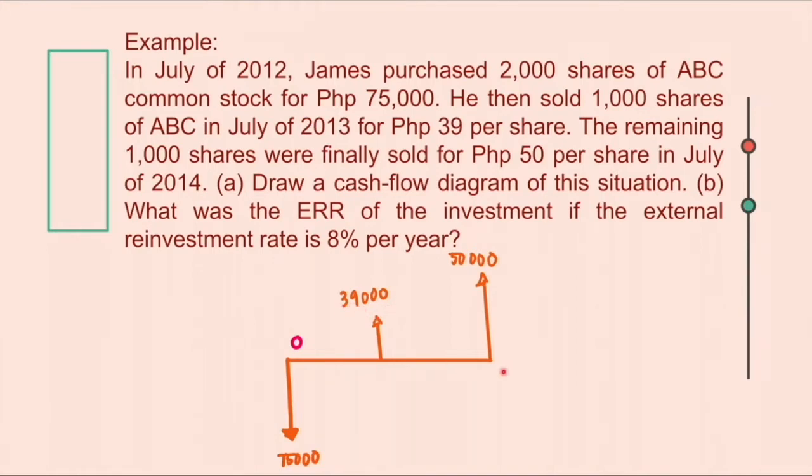And for the next year, he then sold the remaining 1,000 for $50 per share. So that's equivalent to $50,000. So this is the cash flow of this particular problem.